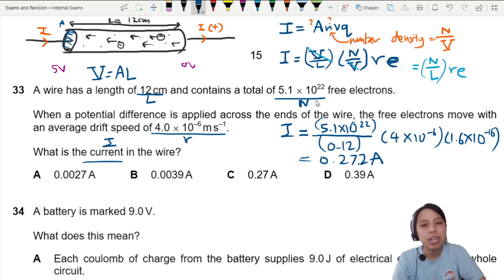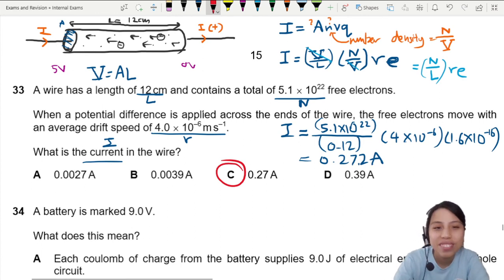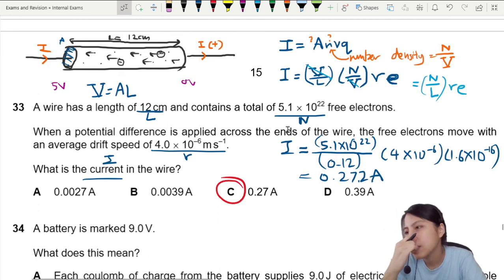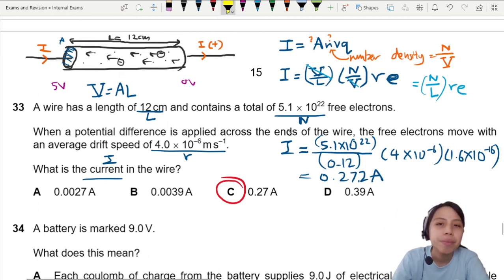Here, so 0.272. 0.27 is the best choice, so answer is C. So it's quite tricky. I haven't seen many questions they asked in this manner, because usually we just use I = A n v q and we can find the answer.